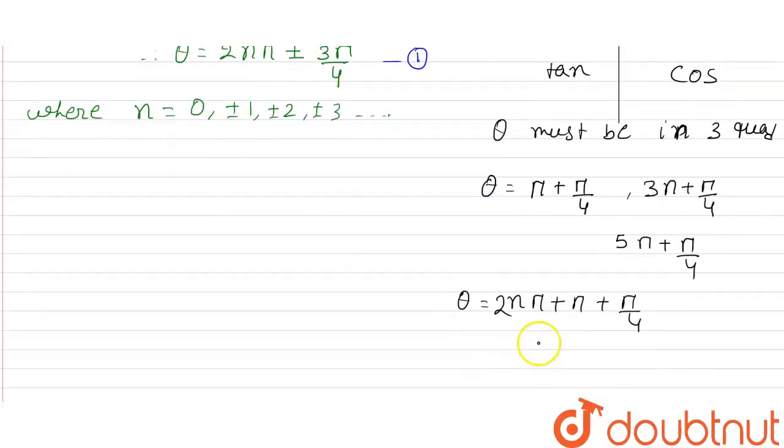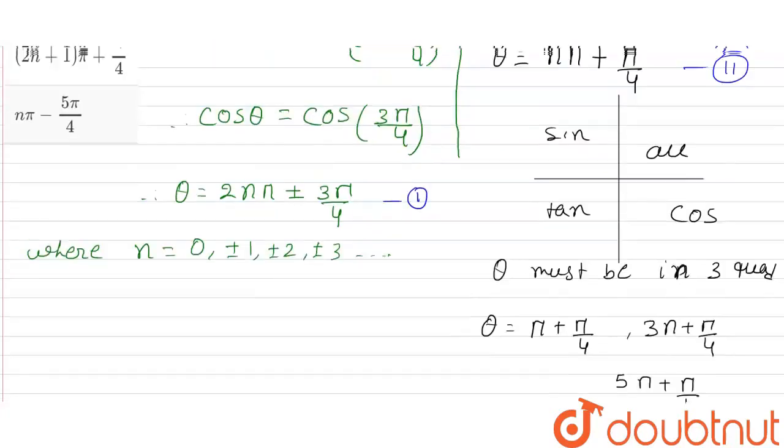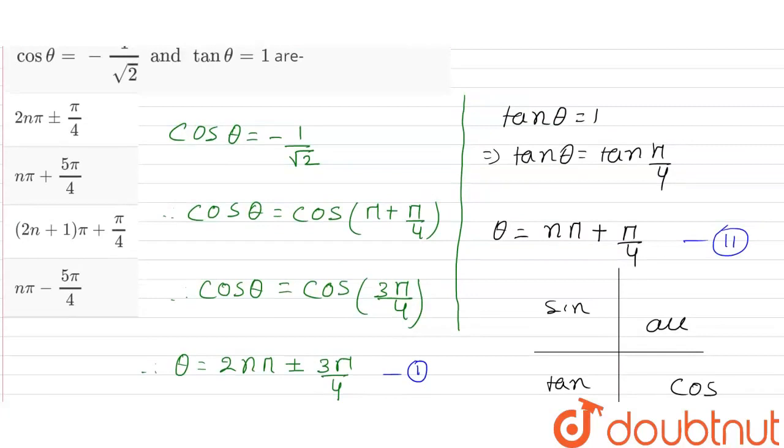This is equal to pi plus pi by 4, which is 2n plus 1 into pi plus pi by 4. This matches option C. Therefore, option C is your right answer.